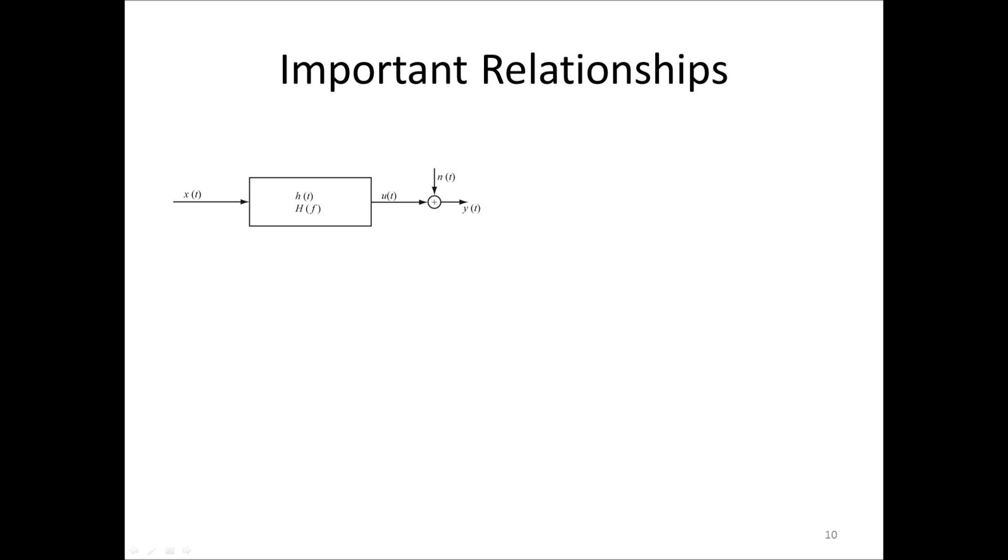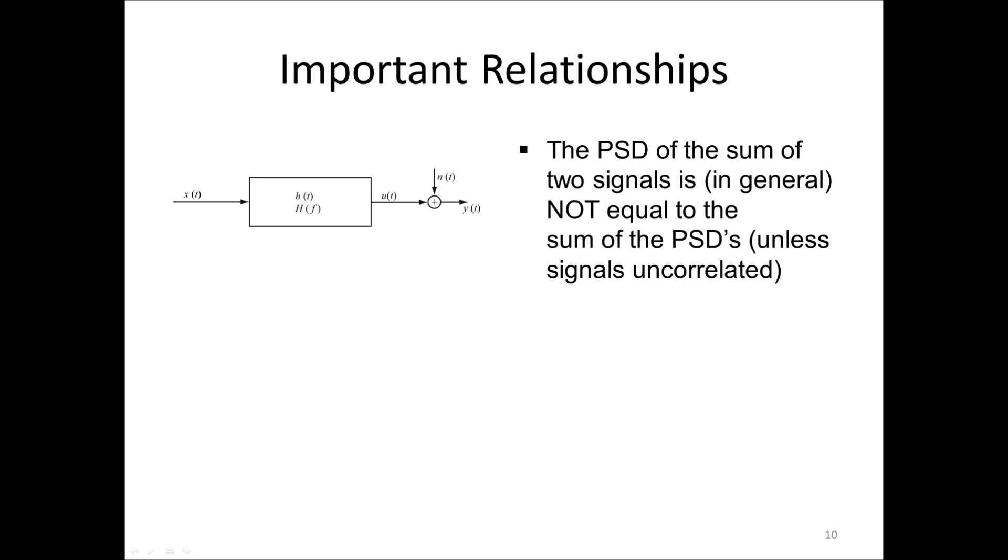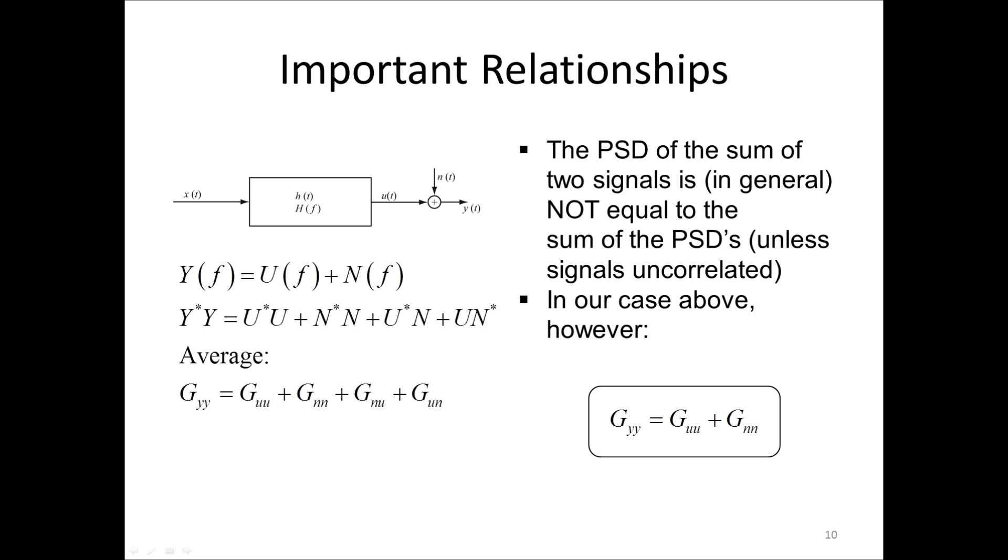Another important relationship for spectra is that the PSD of a sum of two signals is, in general, not equal to the sum of the PSDs. Here, we have a case on the output of the linear system where the signal Y is the sum of U and N. Setting the equation up and multiplying by the complex conjugate and averaging, we find that GYY is GUU plus GNN plus GNU plus GUN. So, we obtain two cross-spectral densities in the sum. If, however, the two signals U and N are uncorrelated, then GYY equals GUU plus GNN, but only as a special case when U and N are uncorrelated.